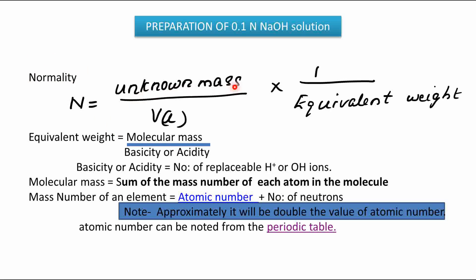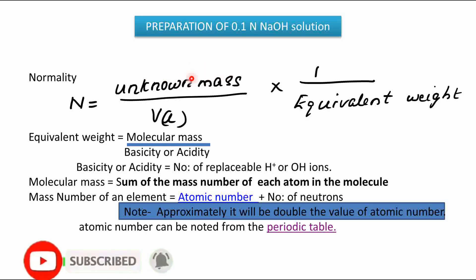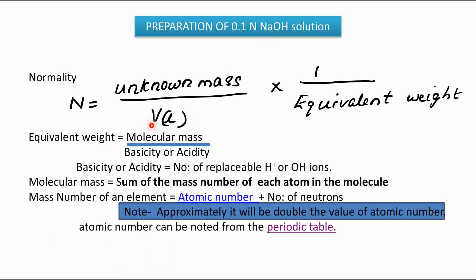The normality equation is: N equals the unknown mass of the compound we need to prepare, divided by volume in liters — that means the amount of solution we need to prepare, converted to liters — multiplied by one divided by the equivalent weight of the compound.